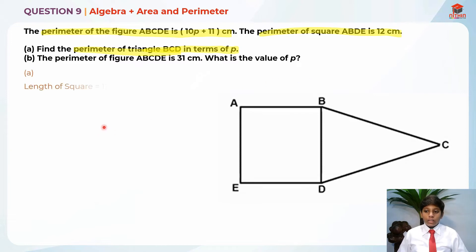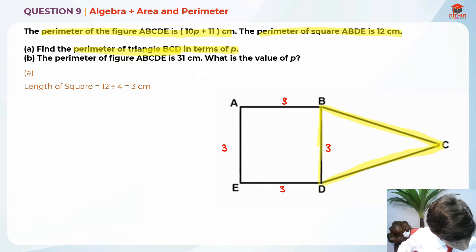You can find the length of the square, which is 12 divided by 4, which is 3cm. So let me write it down. Here it is 3cm, 3cm, 3cm, and 3cm. And they're asking us to find the perimeter of BCD. We need to know the length of line BC and CD, but we do not know that. And the other line is this 3cm over here, BD. So this is a tick already. So let me erase this line. We just need to find BC and CD.